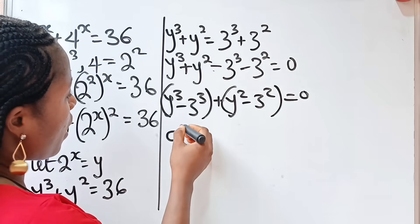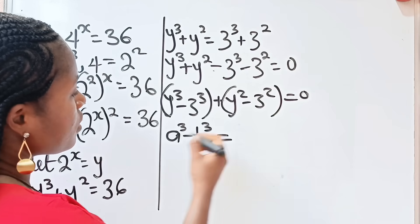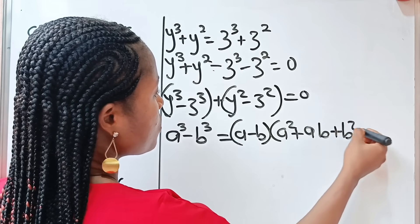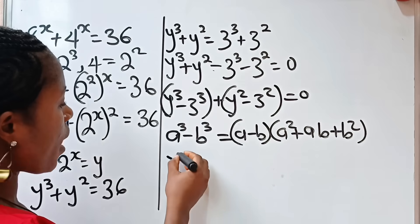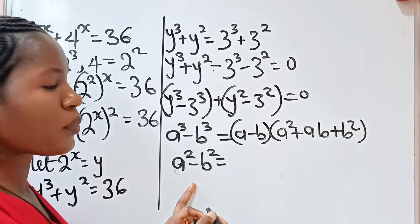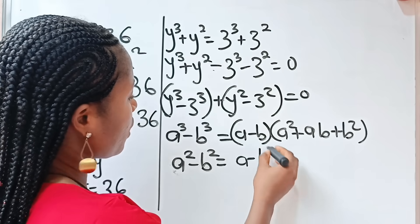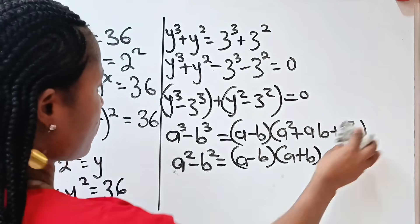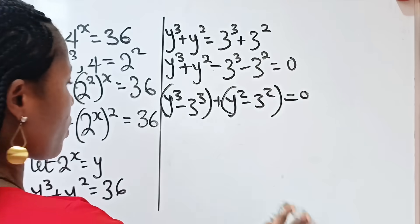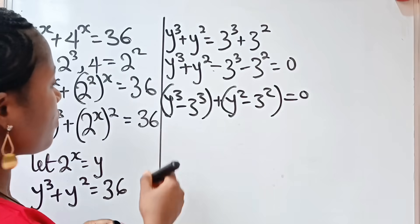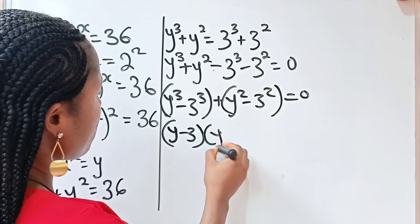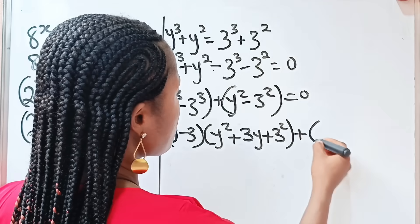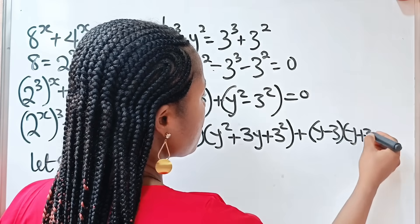Now recall that a to the power of 3 minus b to the power of 3 is equal to (a minus b) multiplied by (a squared plus ab plus b squared). And y to the power of 2 minus b to the power of 2, according to algebra, is equal to (a minus b) multiplied by (a plus b). So that means we can express this as (y minus 3)(y squared plus 3y plus 3 squared), plus (y minus 3)(y plus 3), is equal to 0.